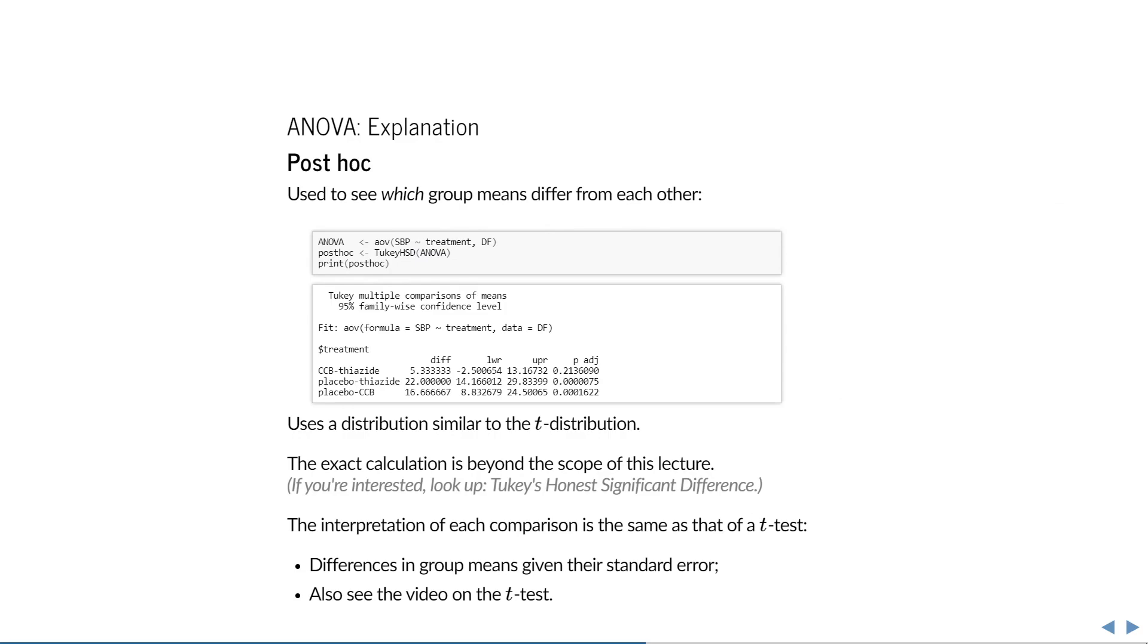The post-hoc is a lot easier to explain. Tukey's honest significant difference is very similar to a series of t-tests corrected for multiple testing. If you know what that means, then you know enough about the post-hoc.